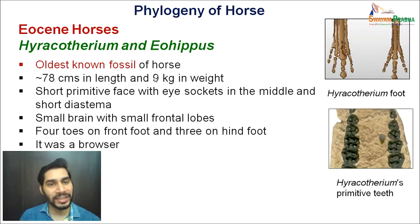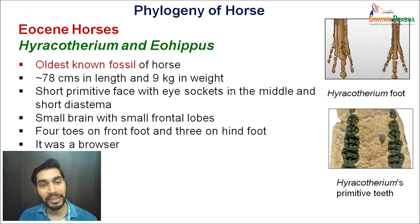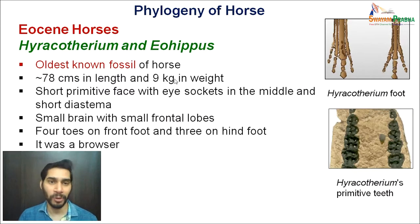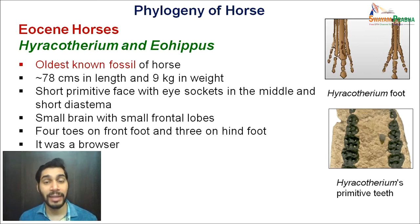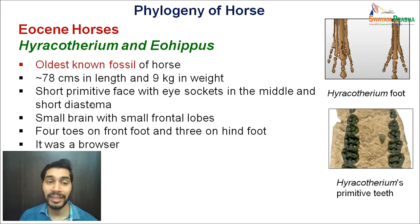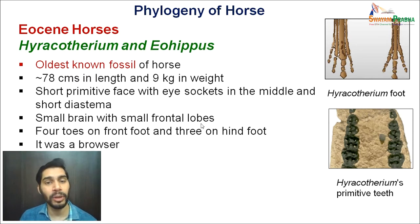These are the oldest known fossils of horse, which probably had a length of around 78 cm and a weight of around 9 kg — none of them were close to the modern horse. They had a short primitive face with eye sockets in the middle and a short diastema. The modern horse has a long pre-orbital region and the eye is far at the back, whereas Hyracotherium had eye sockets in the middle with a very short diastema. Being a very small skull, they also had a small brain with small frontal lobes.